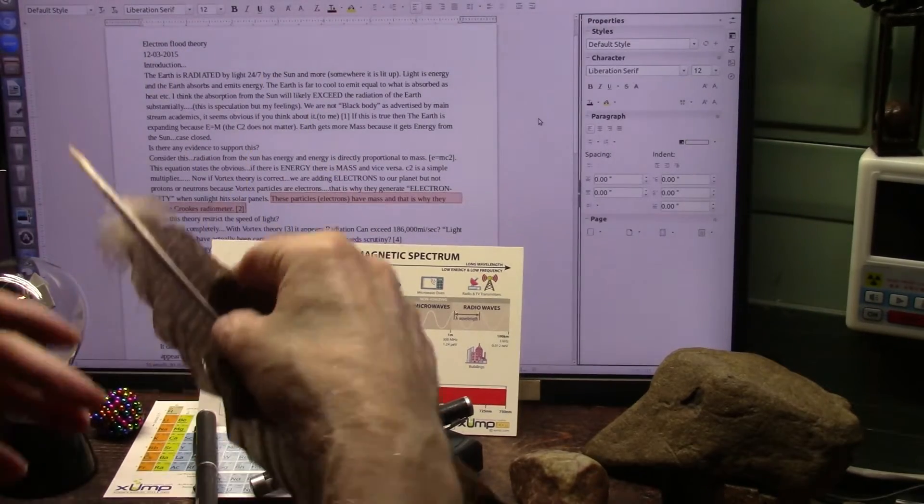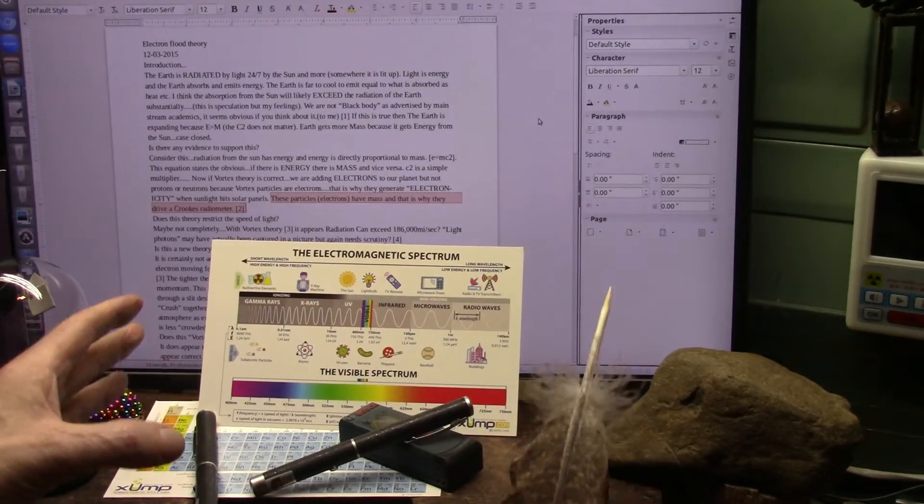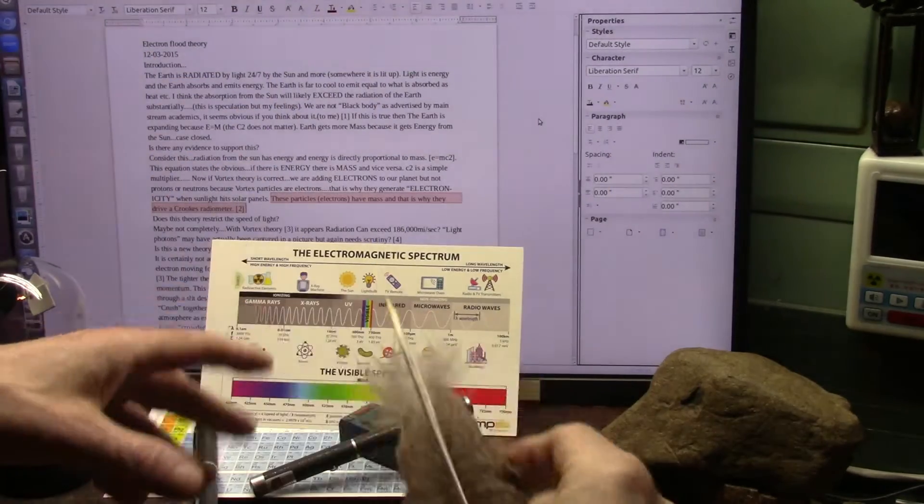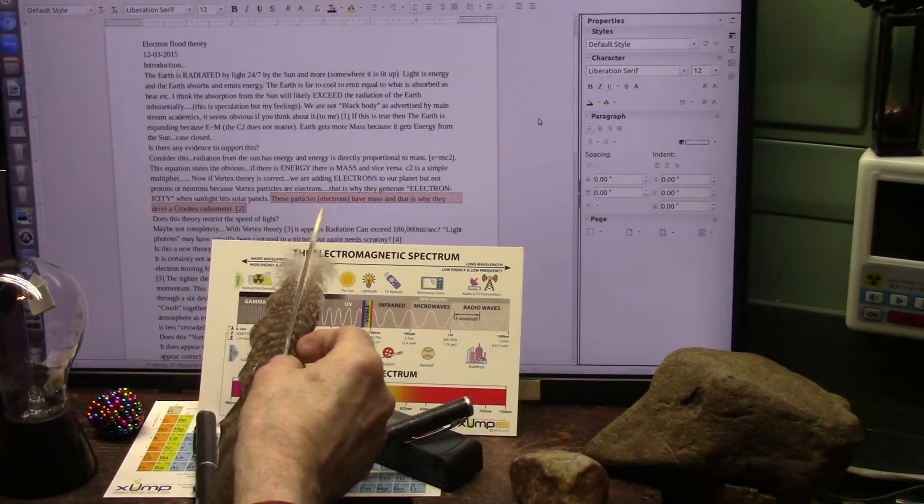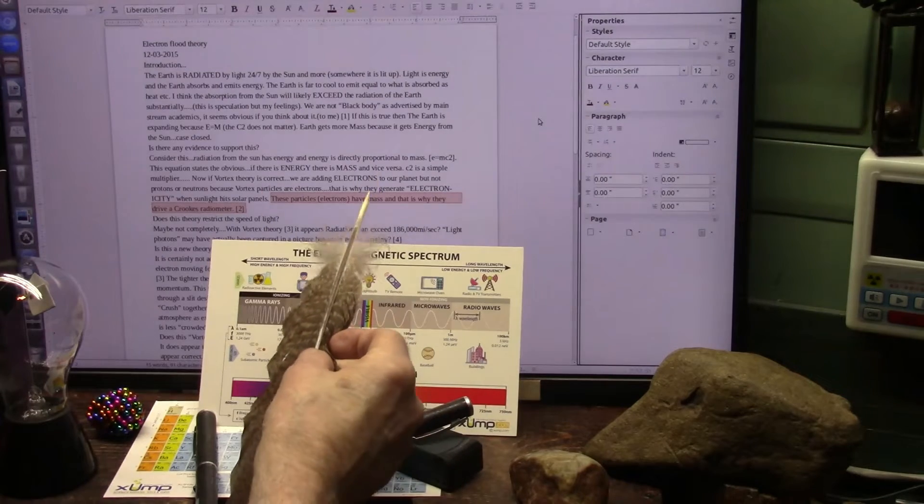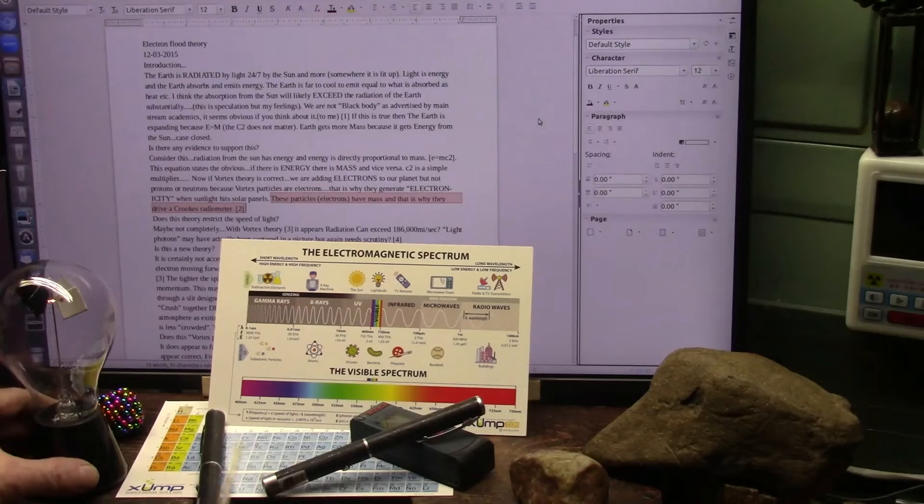I was saying there are really particles that come from the sun. The sunlight is particles, it's not just a wave of nothing, it's particles. These particles, which we would call electrons, have a mass, and that's why they drive a Crookes radiometer, which is this right here.